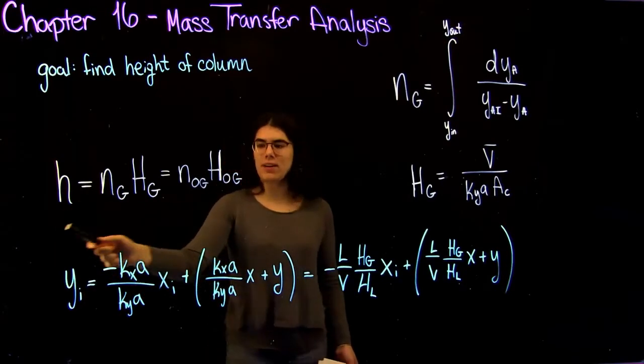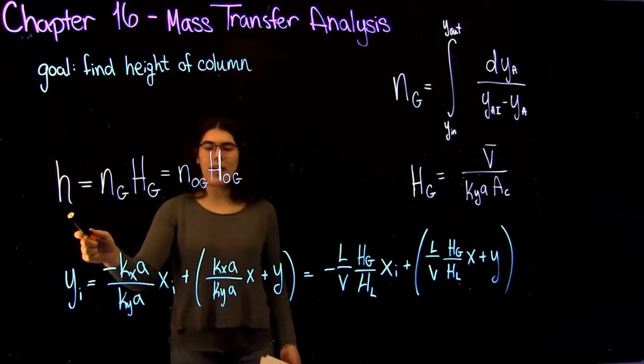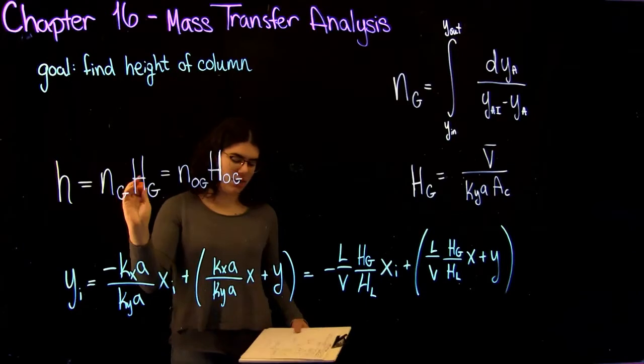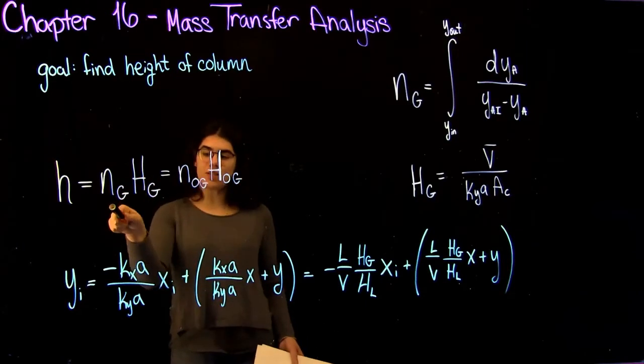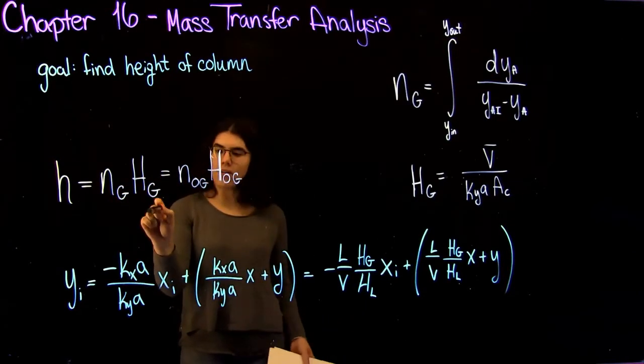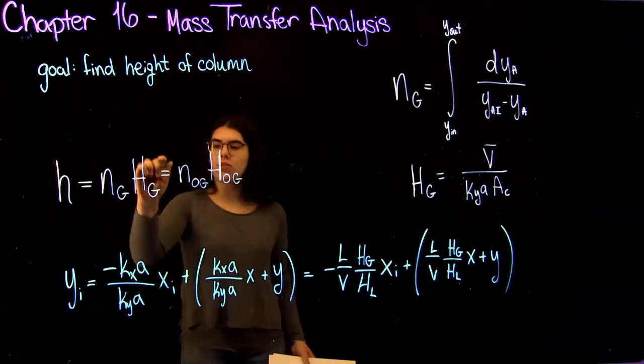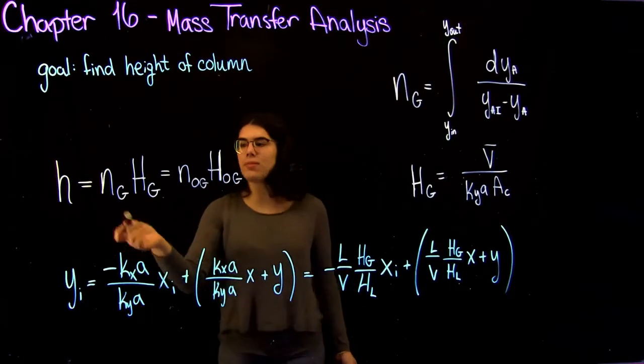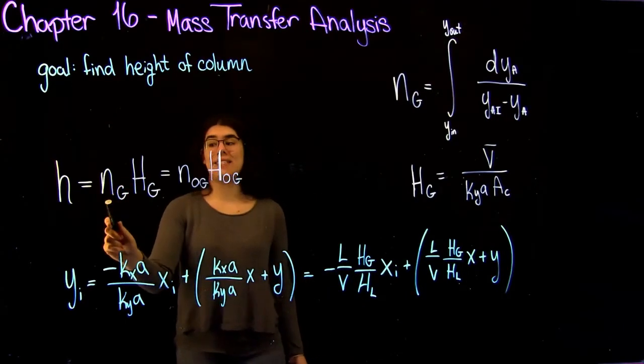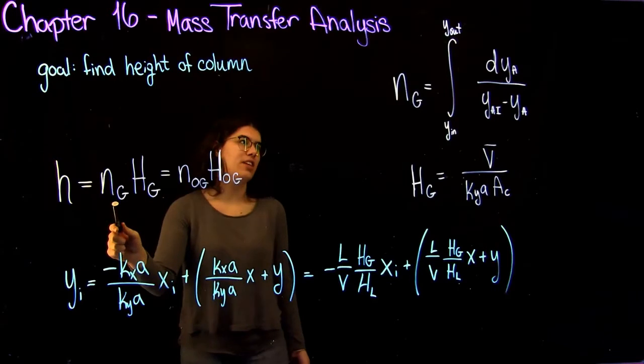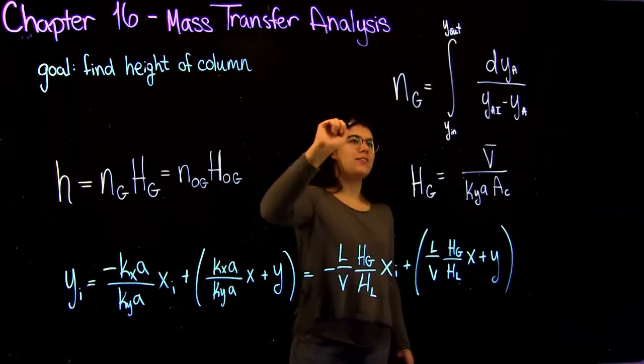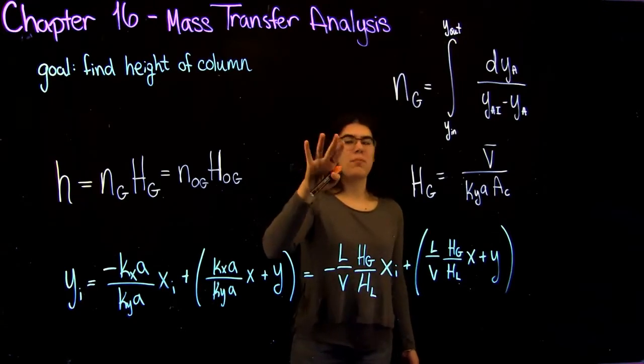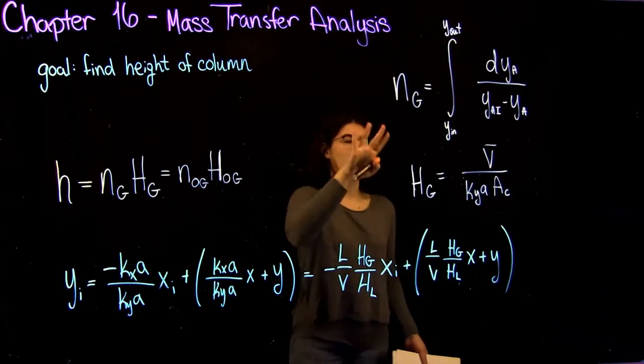This equation here is your guiding equation. The height of either the stripping or enriching section of your column is equal to the number of gas phase transfer units, Ng, multiplied by the height of your gas phase transfer unit. Usually you'll be given this value of Hg or HRg, which is the same thing but for the overall, and you'll be asked to calculate the value of Ng. Ng can be calculated using this equation here.